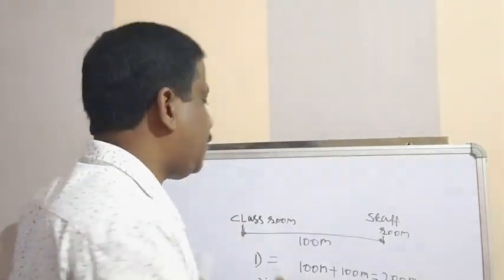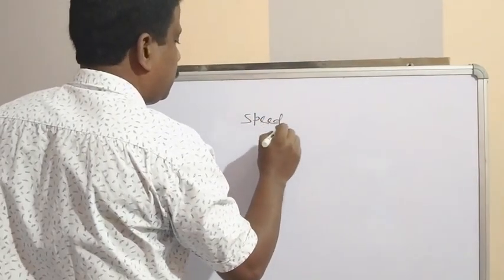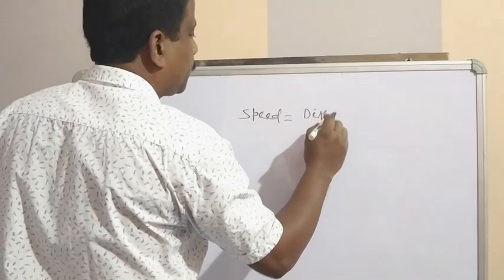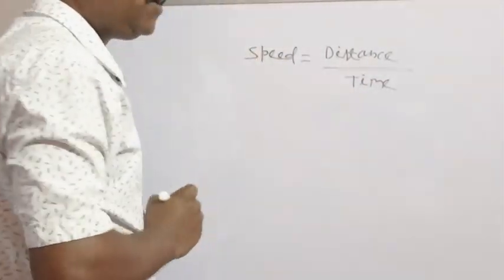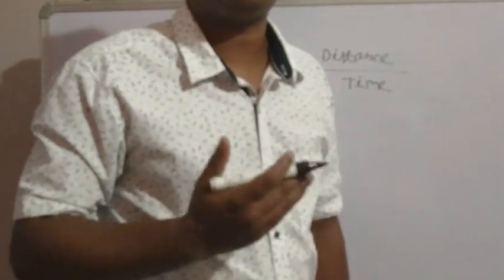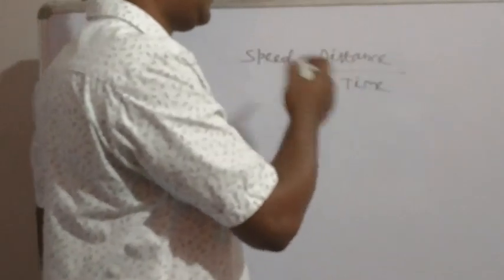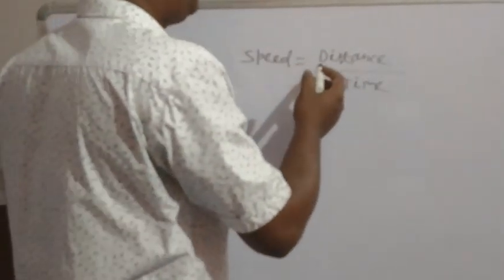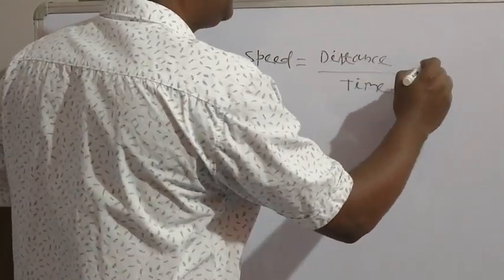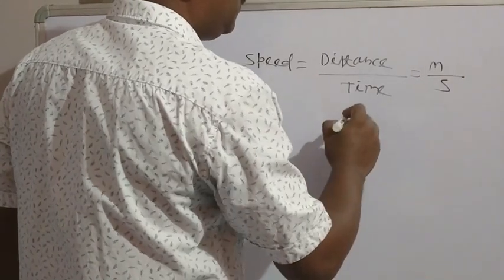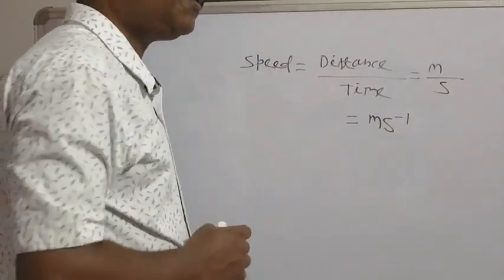Speed formula: speed is equal to distance by time. What is the unit of speed? From the formula: distance unit is meter, time unit is second. So the SI unit of speed is meter per second.